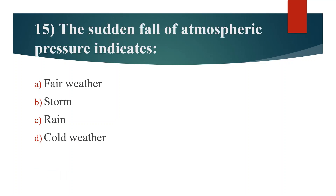Fifteenth question. The sudden fall of atmospheric pressure indicates. Option A: Fair weather. Option B: Storm. Option C: Rain. Option D: Cold weather. Answer is Option B: Storm.